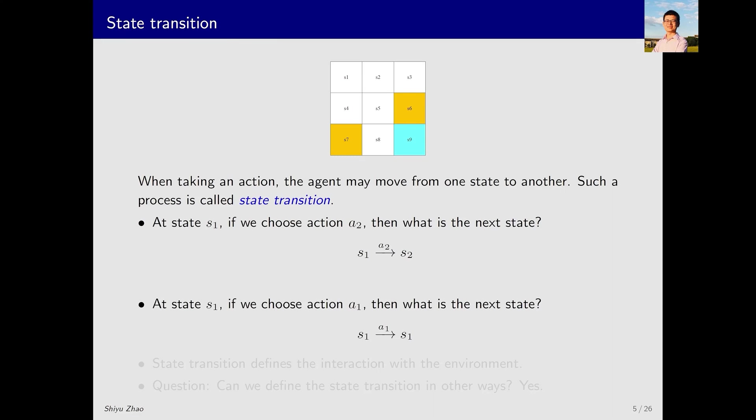Let's consider another example. In S1, taking action A1, which is moving up, leads to the next state being S1 again. Why is that? When attempting to move up from S1, the agent encounters the boundary, like a wall, and is thus bounced back to S1. This illustrates the concept of state transition.